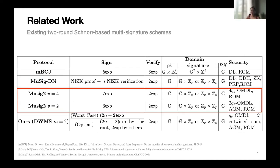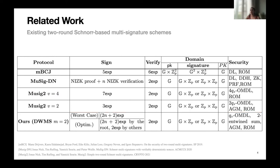MuSig2-Tian is a concurrent work with ours and we both use a similar approach. Our parameters M and V correspond to the same parameters in their scheme. They show MuSig2-Tian is secure if V = 4 in the standard model, and if V = 2 then it is secure in the algebraic group model. Similarly, we also show our protocol is secure in the algebraic group model when M and V are close to 2. With an optimized network based on a tree structure, the signing process can be executed much more efficiently.